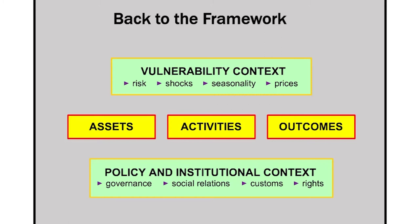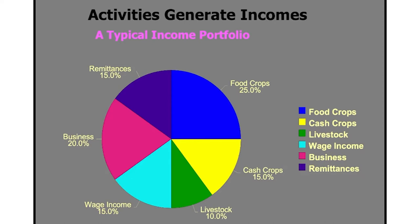Coming back to the framework, we look at the next element: activities. This is an example taken from Frank Ellis of an income portfolio. We engage in various activities to generate incomes, whether through subsistence food crops, cash crops, or other kinds of activities. He shows that people typically have a diverse portfolio of activities — nobody is dependent on only one aspect.